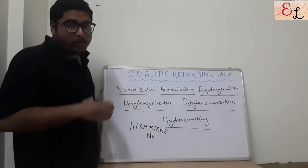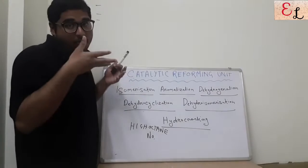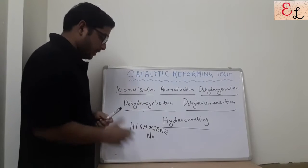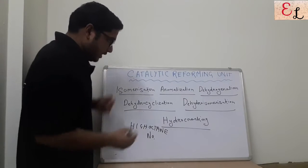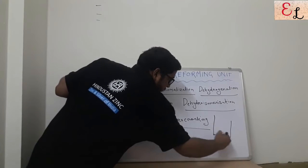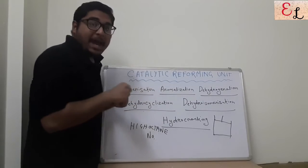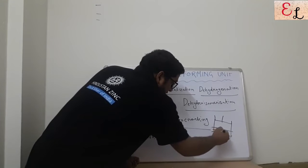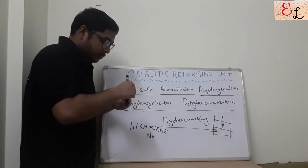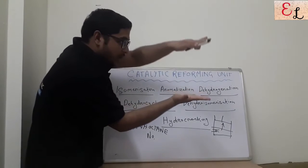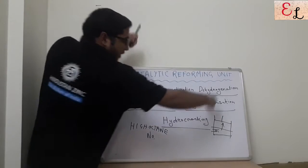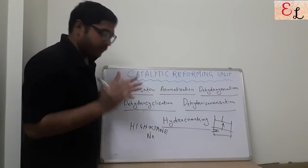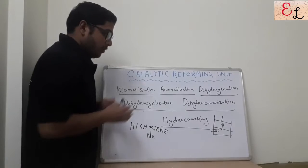Before understanding catalytic reforming, let me give you a small example. A person is driving a car on a highway on a sunny day, 2 to 4 hours constantly. His engine has got heated up. When he is driving the car, this is my engine — this is my piston-cylinder arrangement. At regular intervals, this piston will come down, the spark will be ignited, and the piston will go up. This is our cyclic arrangement in a simplified IC petrol engine, because it is a spark ignition engine.